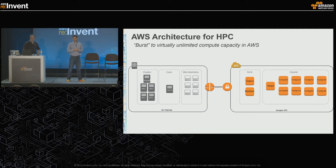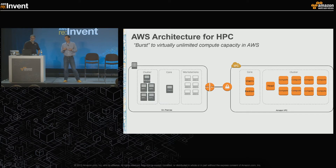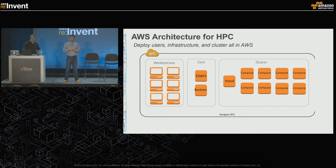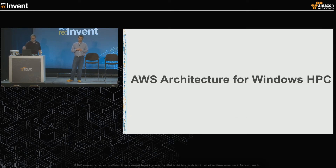In the burst or hybrid topology, you leverage a VPN connection via VPC to connect your on-premises cluster - with its head node, compute nodes, user directory, and workstations - to the bastion hosts and resources running inside AWS. In the all-in AWS architecture topology, everything runs inside AWS: workstations leverage Amazon WorkSpaces, and all core and cluster infrastructure runs inside EC2 instances in the cloud. With that, I'll turn it over to Julian to dive deeper into AWS architecture for Windows HPC.